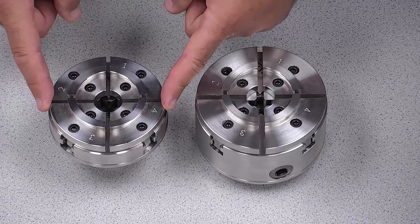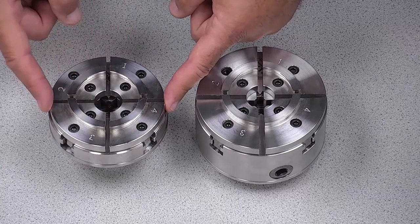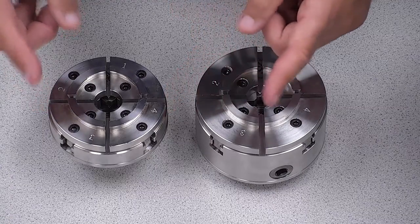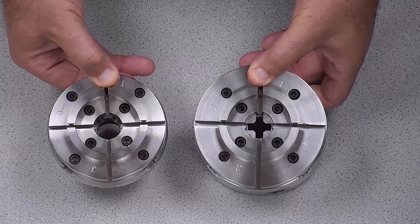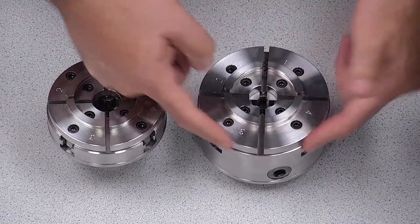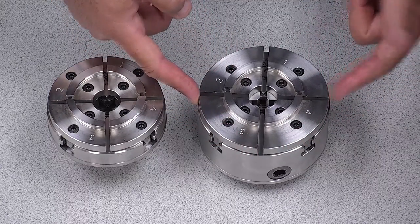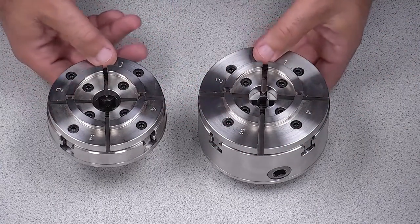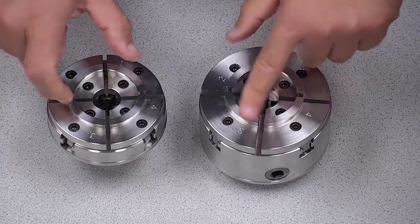Over here we have the SK100, 100 millimeters or about four inches in diameter. They're both fitted with the type C dovetail jaws and as you can see, even though the diameter of the jaw backplate here is slightly larger on the SK114 as compared to the 100, the C jaws are exactly the same with regard to the internal diameter.